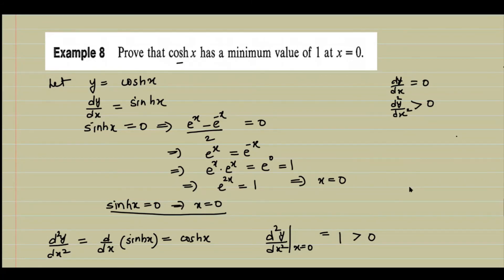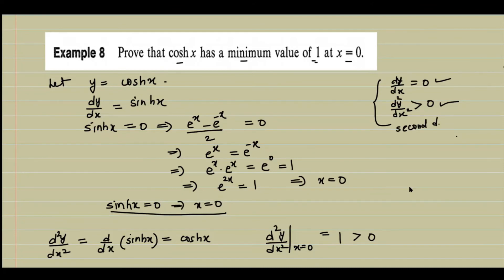Example 8: Prove that cosh x has a minimum value of 1 at x = 0. Let y = cosh x. Recall from the second derivative test: at a minimum, the first derivative dy/dx = 0 and the second derivative d²y/dx² > 0. Using this test we will prove cosh x has minimum value 1 at x = 0.